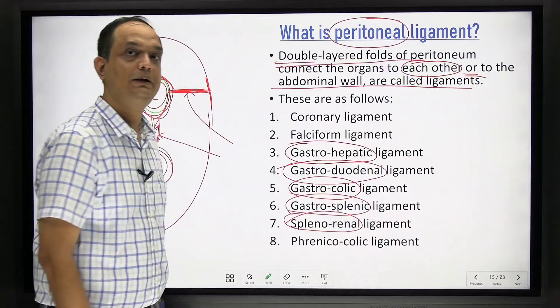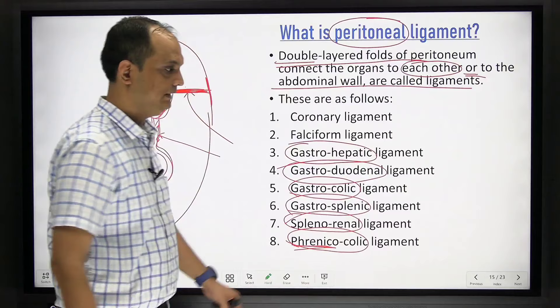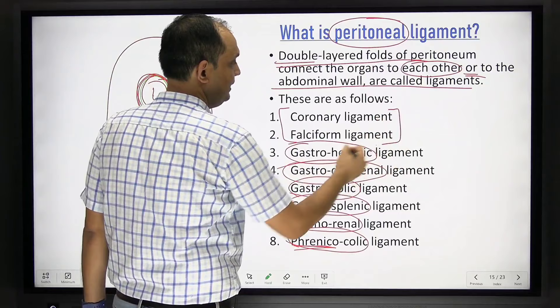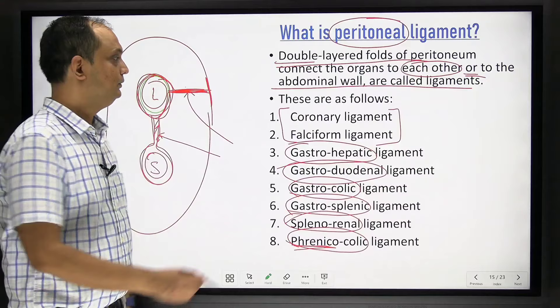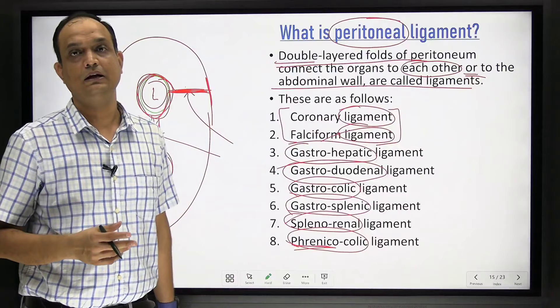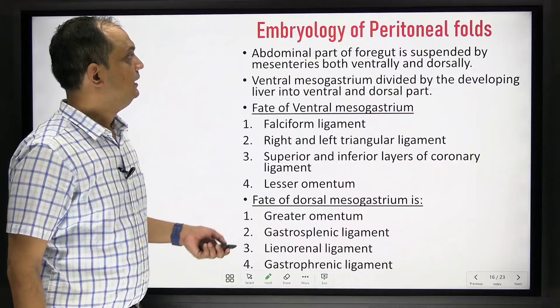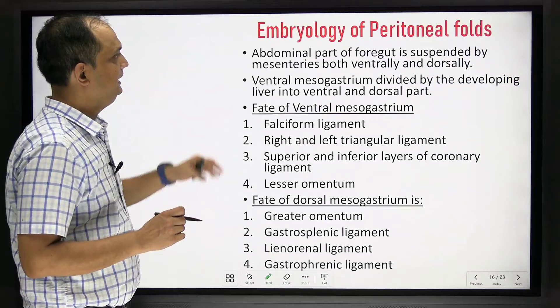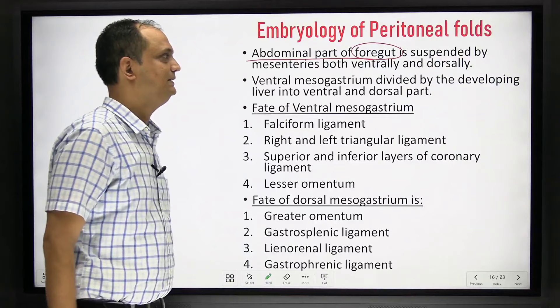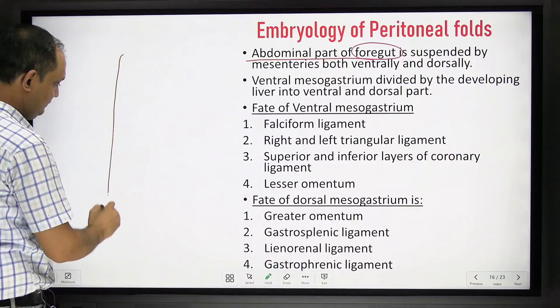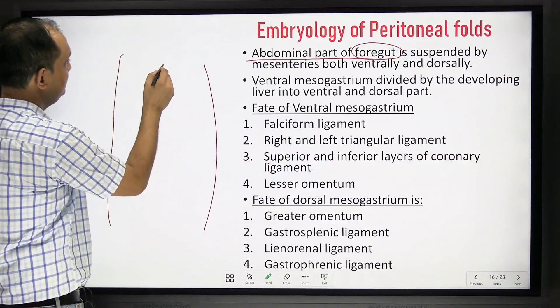Additional ligaments around the liver include coronary ligament and falciform ligament. These peritoneal ligaments are not tough structures like bone ligaments — they are very delicate double-layer peritoneal folds. The abdominal part of the foregut is suspended by mesentery both ventrally and dorsally.